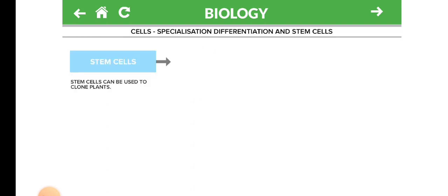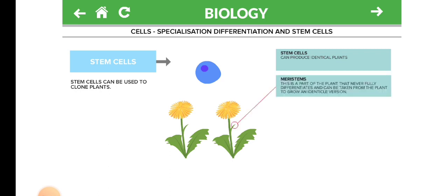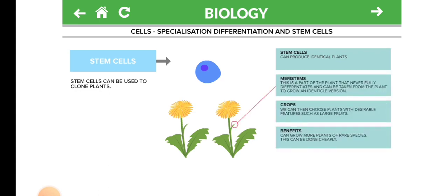Plant Stem Cells. Stem cells can be used to clone plants and produce identical plants. Meristems: this is a part of the plant that never fully differentiates and can be taken from the plant to grow an identical version.